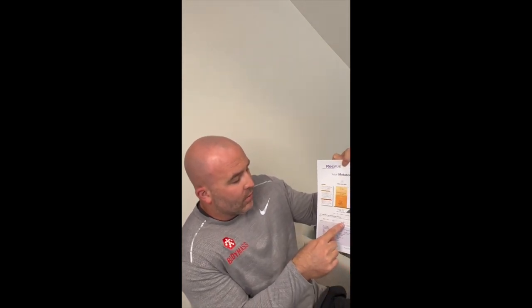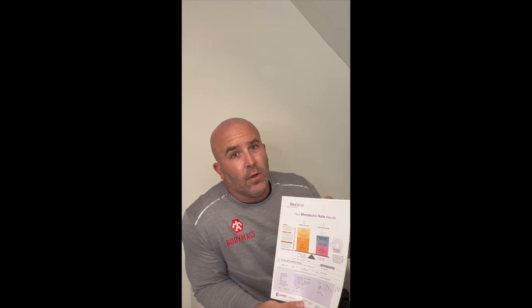Right below that it gives us a comparison to what's called a predictive norm. The predictive norm compares you to what we can expect someone of a similar sex, age, height, and weight to burn at a resting metabolic rate. That number is put on a scale — right in the middle is normal, and plus or minus 10 percent is also considered normal. So if your resting metabolic rate says you're five percent faster or slower than predicted, that's still normal.